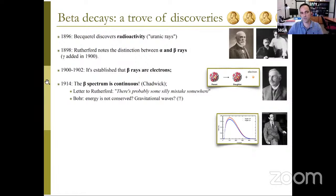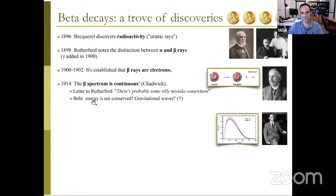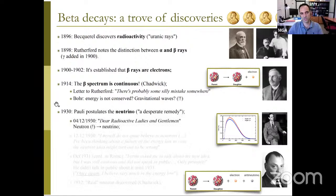At the time, people thought there was a parent nucleus transforming into a daughter nucleus plus an electron. Of course, they didn't know about the neutrino. It took around 15 years to realize that the beta spectrum was continuous — people thought the beta spectrum should be a line, in analogy with alpha rays, as it was a two-body decay. This was discovered by Chadwick, who in a letter to Rutherford wrote, 'there's probably some silly mistake somewhere.'